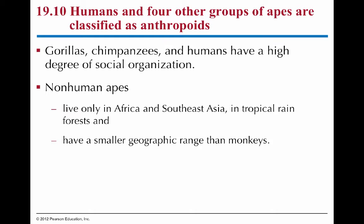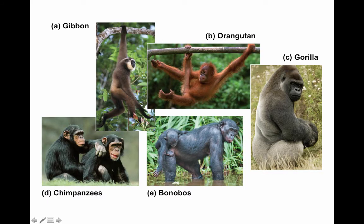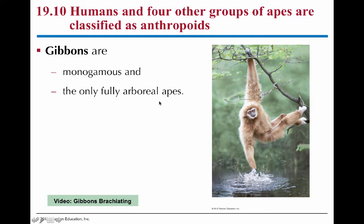We only see apes — besides humans, who live everywhere — living in Africa and Southeast Asia. We don't have apes in the Americas or Australia. Gorillas and chimpanzees have the most social organization. Gibbons live completely in the trees, are very good at brachiating — swinging from tree to tree — they're monogamous, and relatively small compared to other apes.